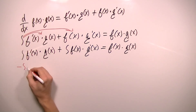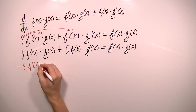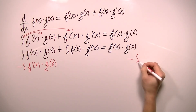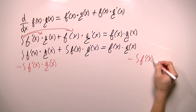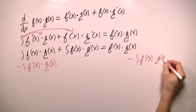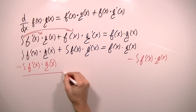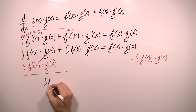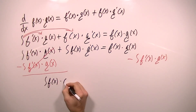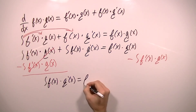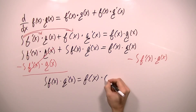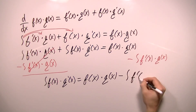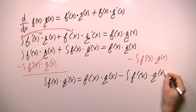Now I'm going to subtract the integral of f′(x)·g(x) from both sides of this equation. These will cancel, and I'm left with: the integral of f(x)·g′(x) equals f(x)·g(x) minus the integral of f′(x)·g(x).